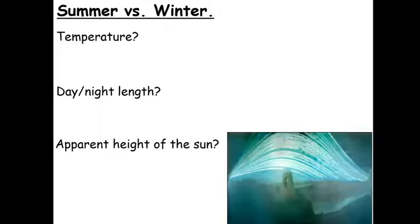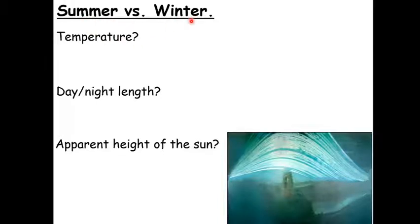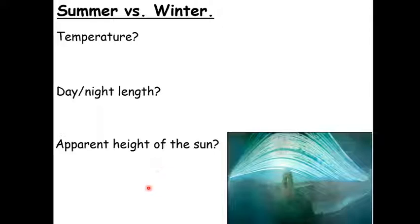Back to thinking about the differences between summer and winter. I want you to think about three things: temperature — how does that compare in summer versus winter? Summer is June, July and August; winter is December, January and February. How do the lengths of day and night compare? And how does the apparent height of the sun change in summer compared to winter? Pause the video and have a quick think about each of these three things.